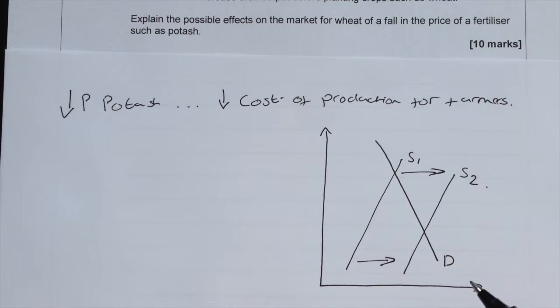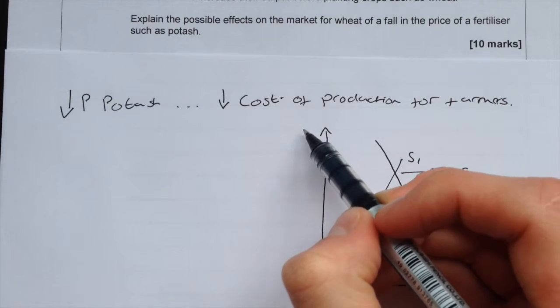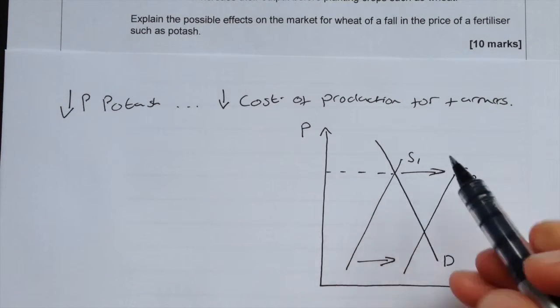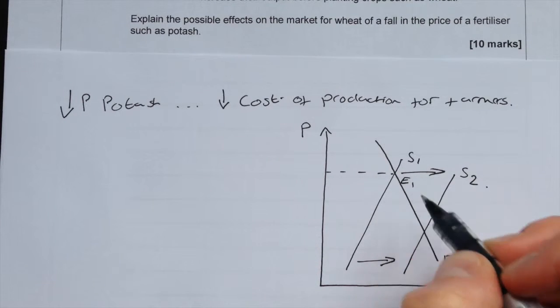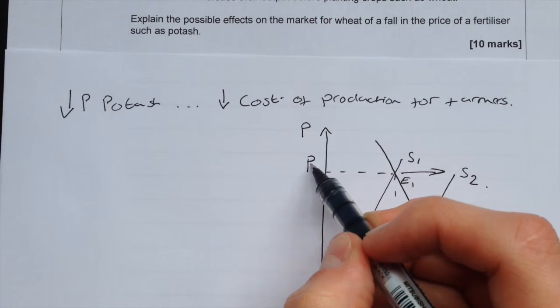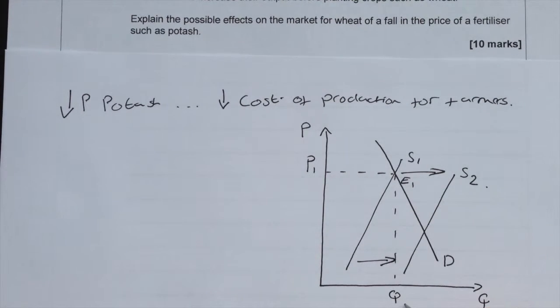Our firms are willing to supply more to the market, so we'll put price here and quantity here. Our initial equilibrium was here at point E1, and this is where we had P1 and Q1. Our new equilibrium is here at E2.